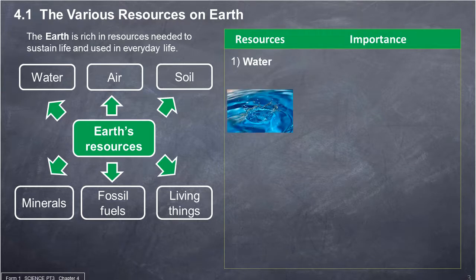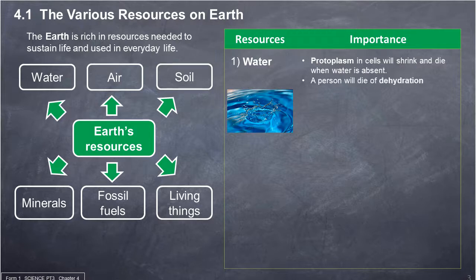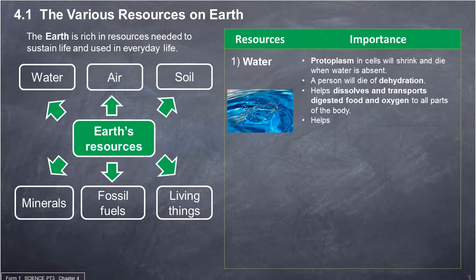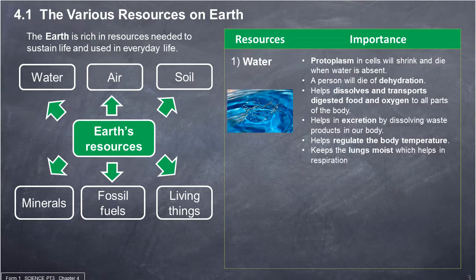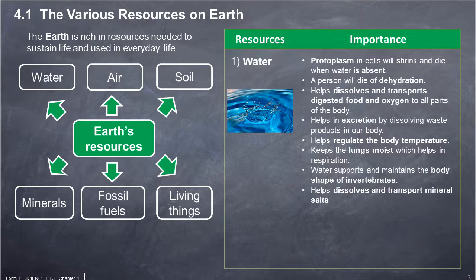The importance of water: our protoplasm in cells will shrink and die when water is absent. A person will die of dehydration. Water helps dissolve and transport digested food and oxygen to all parts of the body. It helps in excretion by dissolving waste products, helps regulate body temperature, and keeps the lungs moist which helps in respiration.